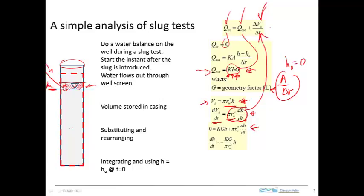This makes sense because right at the beginning of the test, there was a big head gradient, so when the head was highest, we expected the rate of fall to be greatest — and that's exactly what this equation states. This is a first-order ordinary differential equation, and solving it with the initial condition that H equals H₀ at t = 0 gives the equation describing how head changes as a function of time during a slug test.